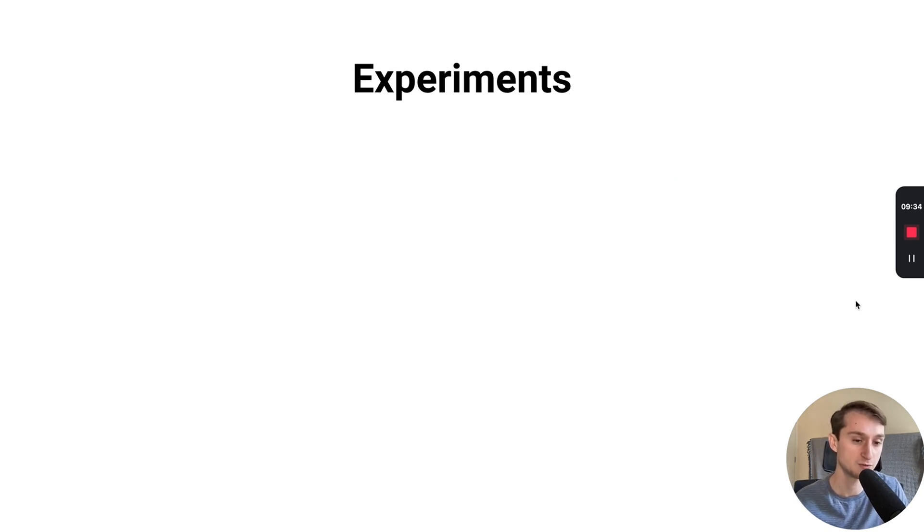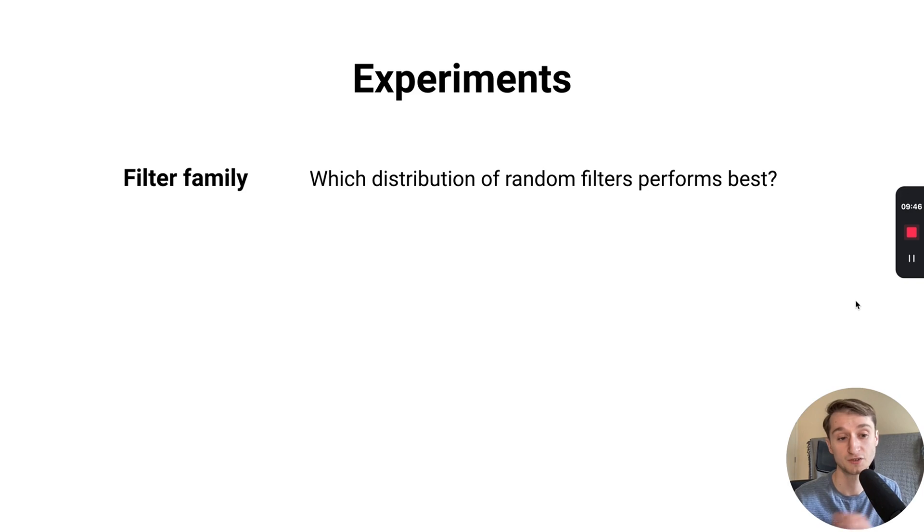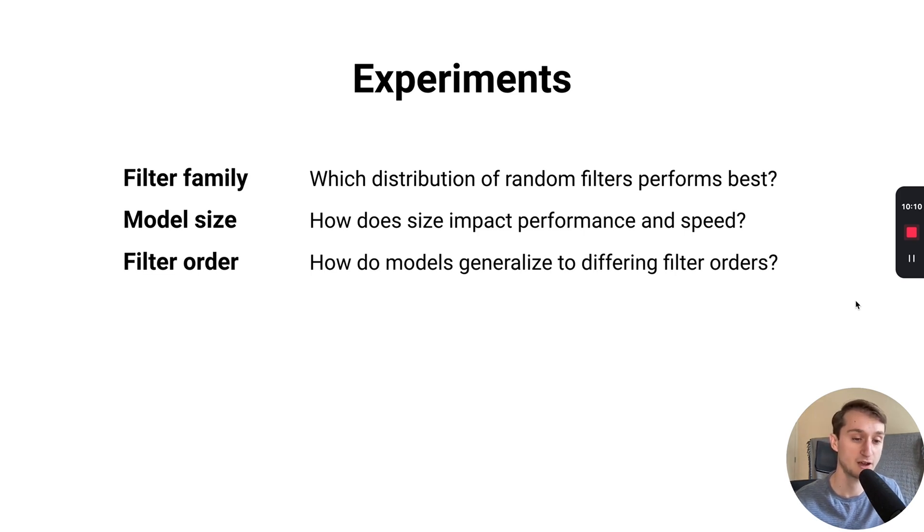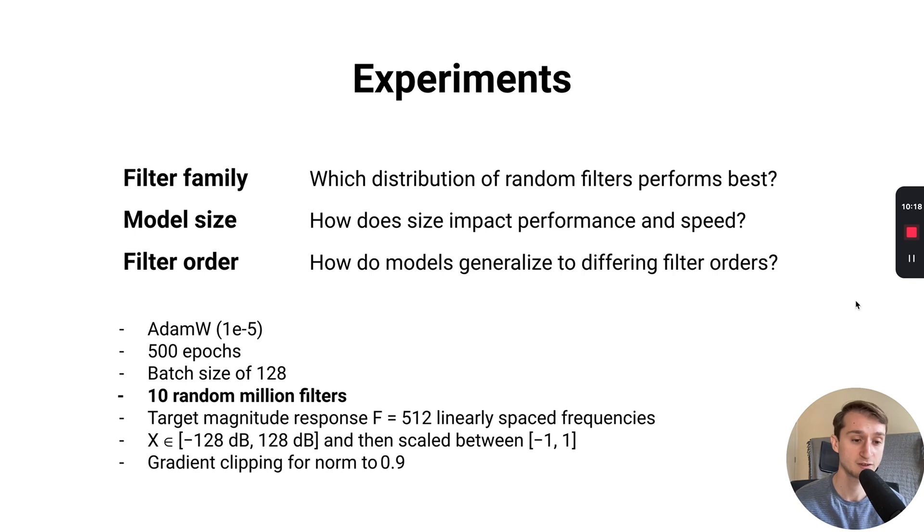Now on to the experiments that we ran to validate our approach and understand how our approach generalized to real-world use cases. We ran three different experiments. The first focused on which of these filter families would produce a distribution of random filters useful for our real-world applications as well as generalizing across different filter families. We also looked at the impact of model size on both the performance with regards to accuracy and speed. We also looked at the filter order, seeing how training at a certain order generalizes or not to different filter orders higher and lower. Here are some of the training details, but I encourage you to check out the paper and code we open sourced. The main thing of note is that all models were trained for the same number of iterations, and they all saw the same 10 million random filters for each filter order that we tried.